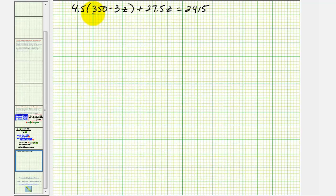Let's distribute. 4.5 times 350 is 1575, and 4.5 times negative 3z is negative 13.5z plus 27.5z equals 2415. Combining like terms, negative 13.5z plus 27.5z is 14z.